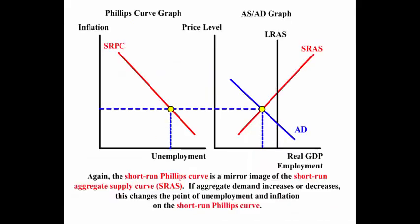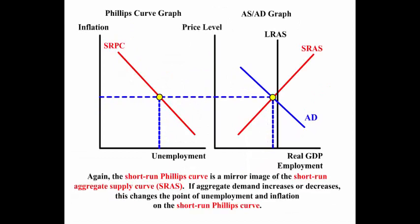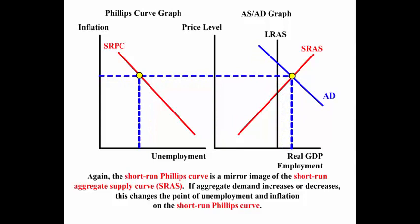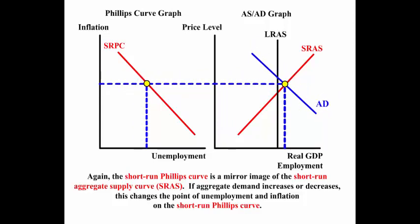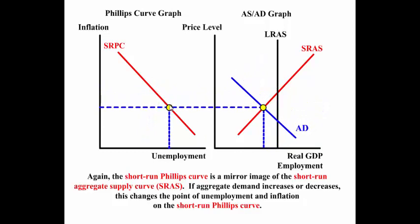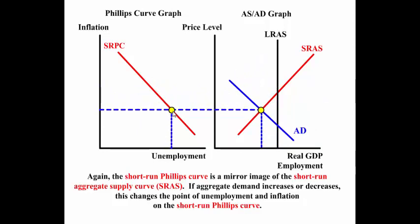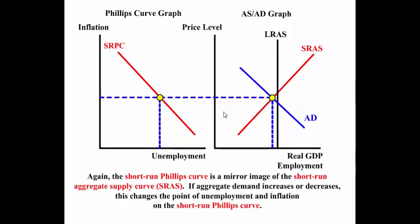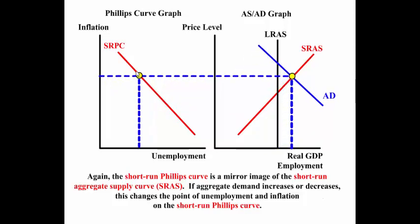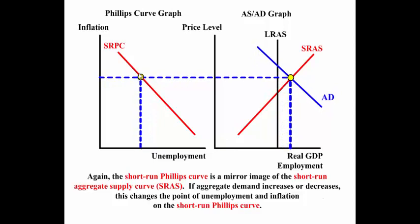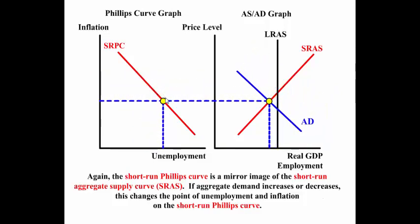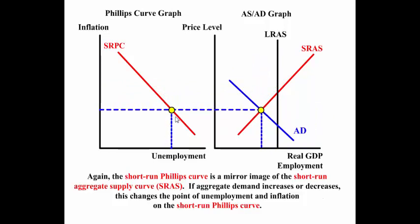Again, the Short Run Phillips Curve is a mirror image of the Short Run Aggregate Supply Curve. If aggregate demand increases or decreases, this changes the point of unemployment and inflation on the Short Run Phillips Curve. As aggregate demand increases along the Short Run Aggregate Supply Curve, inflation rises and unemployment goes down. As aggregate demand shifts to the left, unemployment rises and the inflation rate falls.